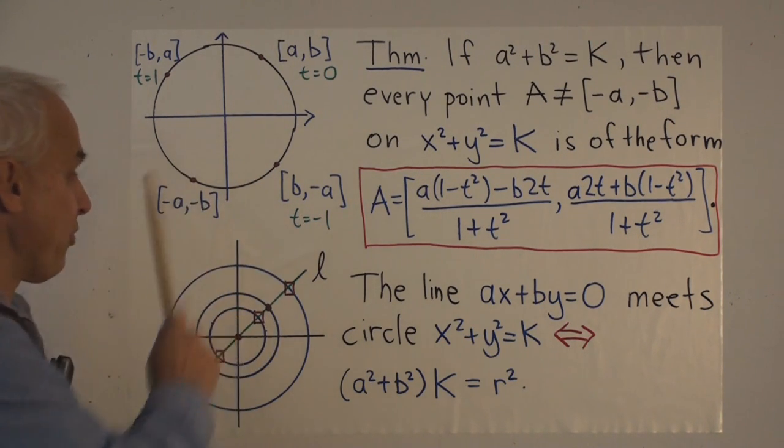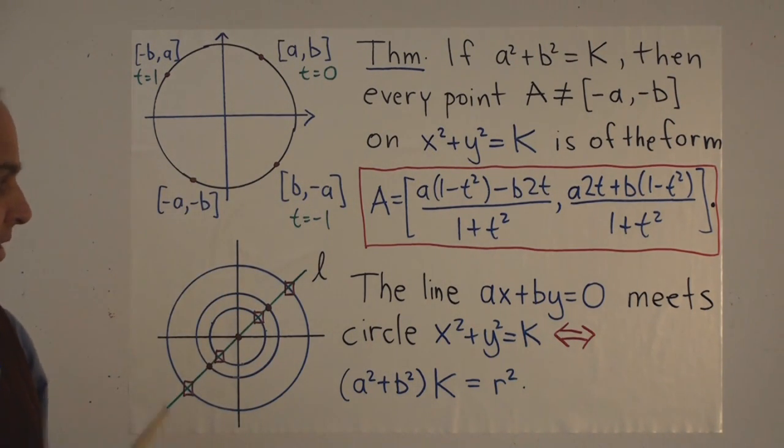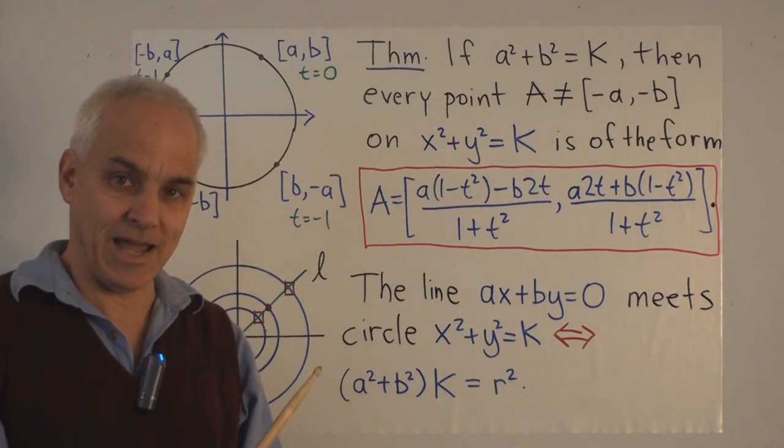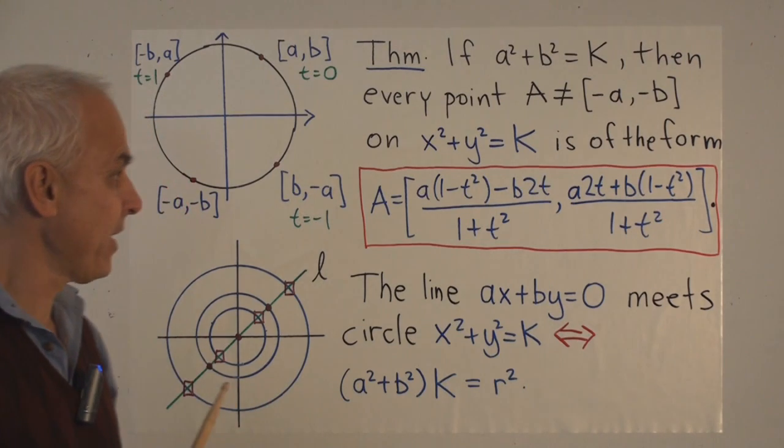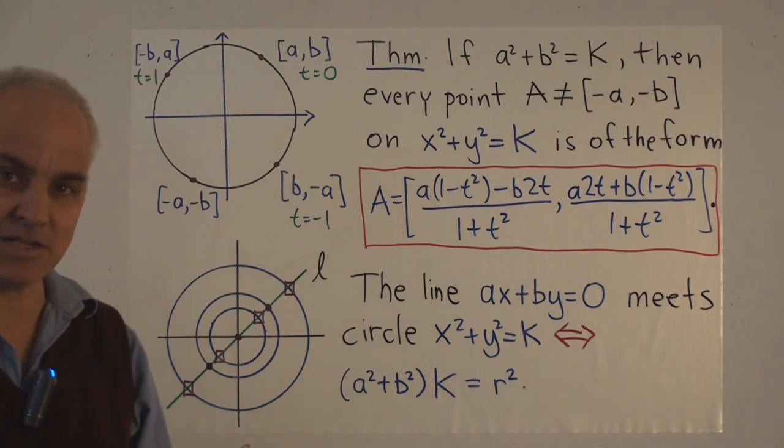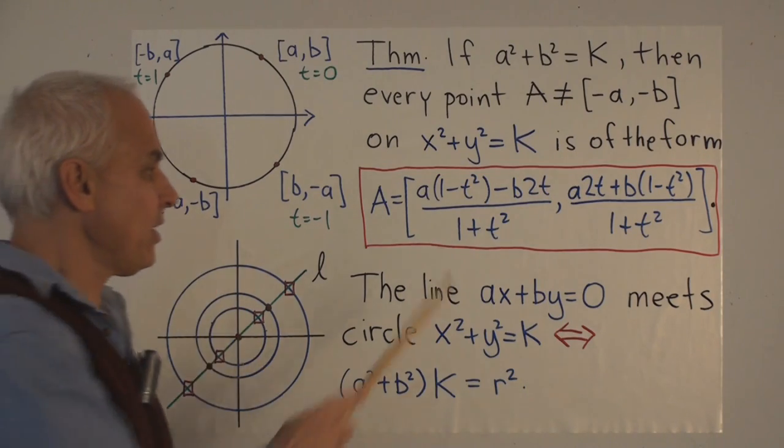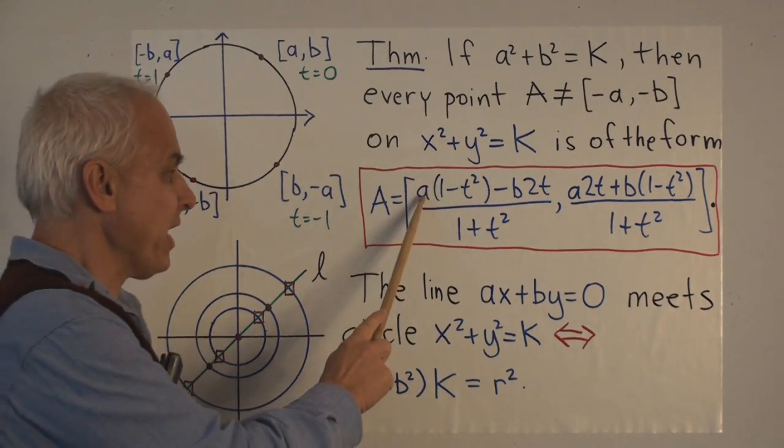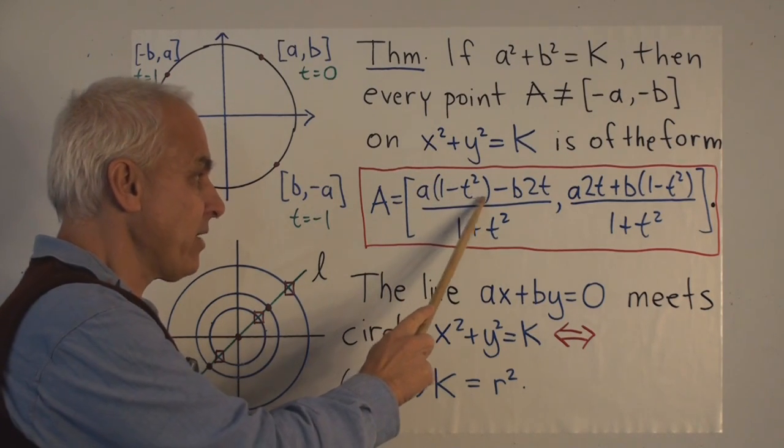How do we parametrize the points on this circle? Well, it's a little bit different, a little bit more complicated, but it's the same generalized idea as for the unit circle. Every point on this circle, with the exception of (-a,-b), can be written uniquely in this form: